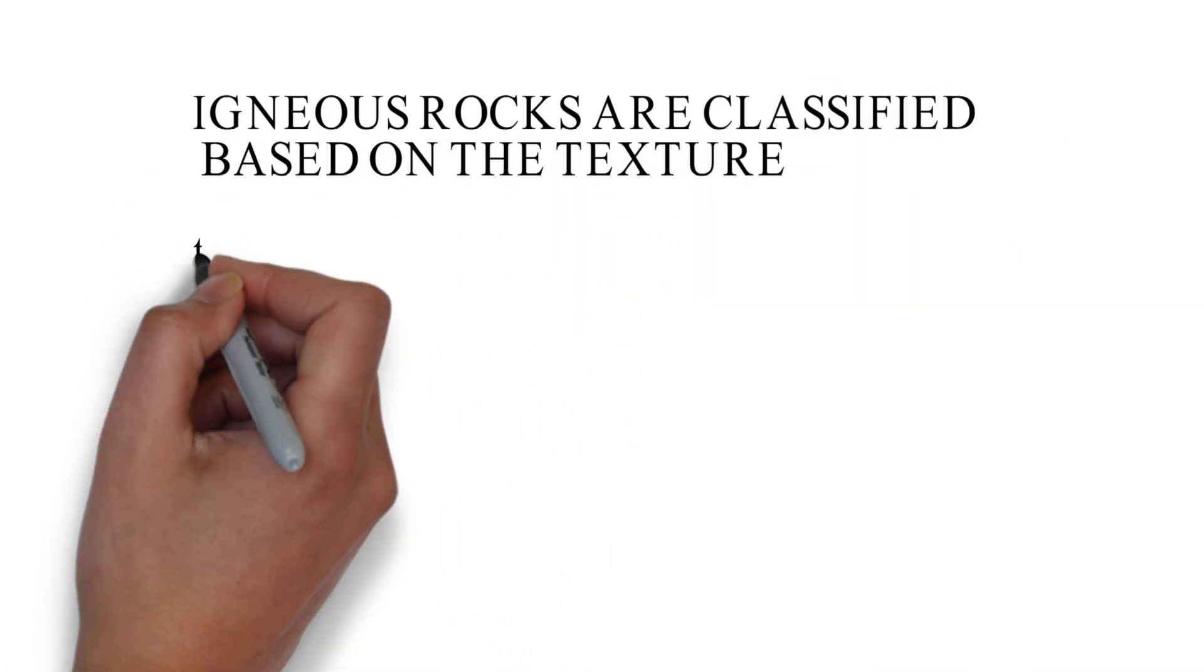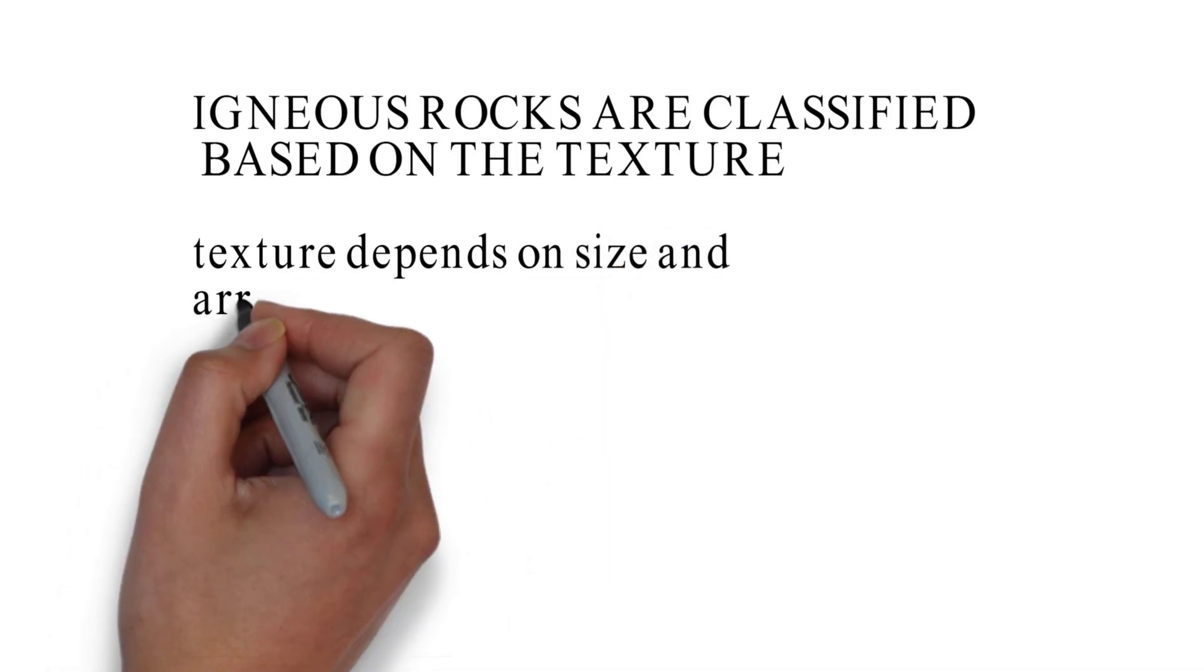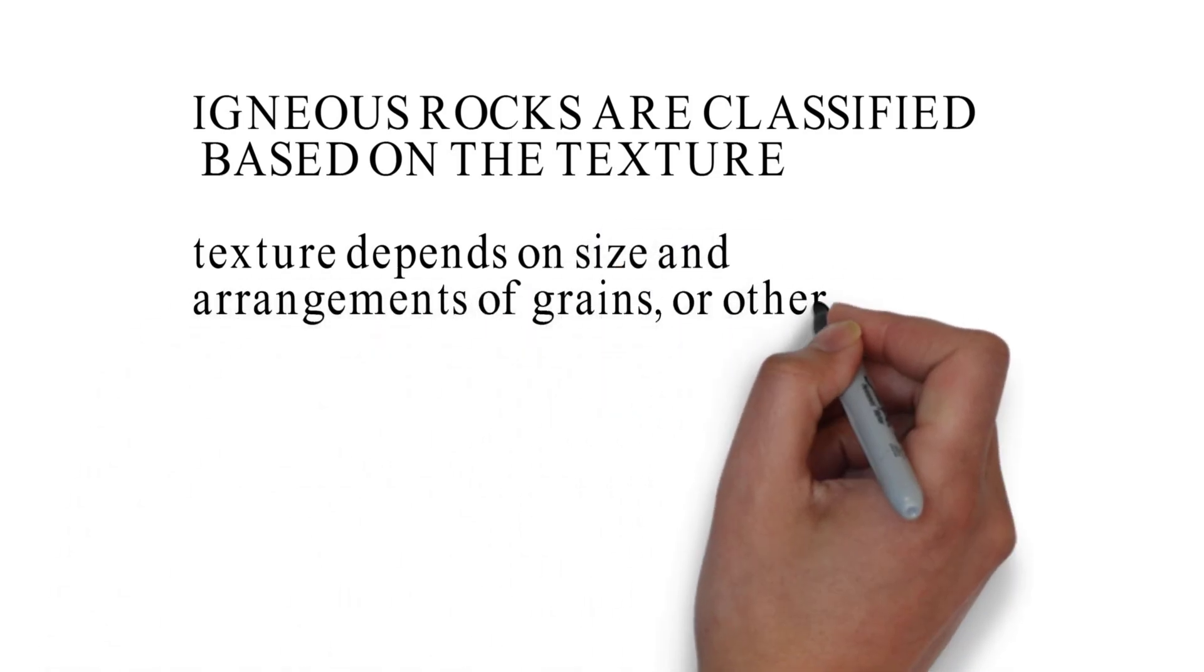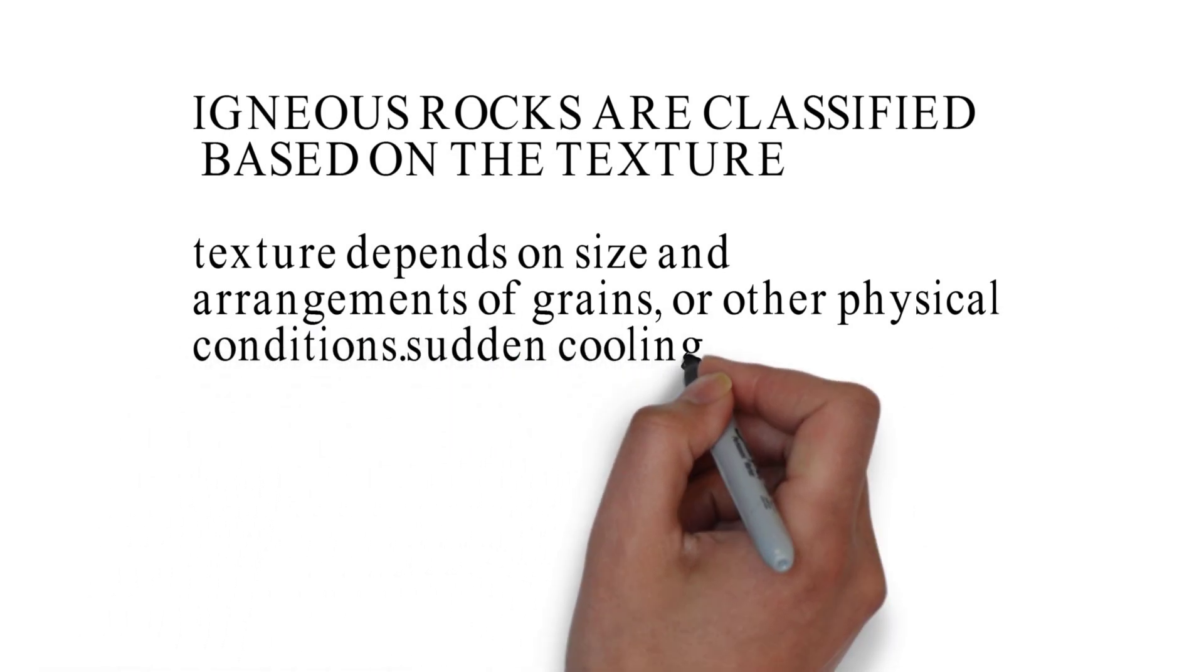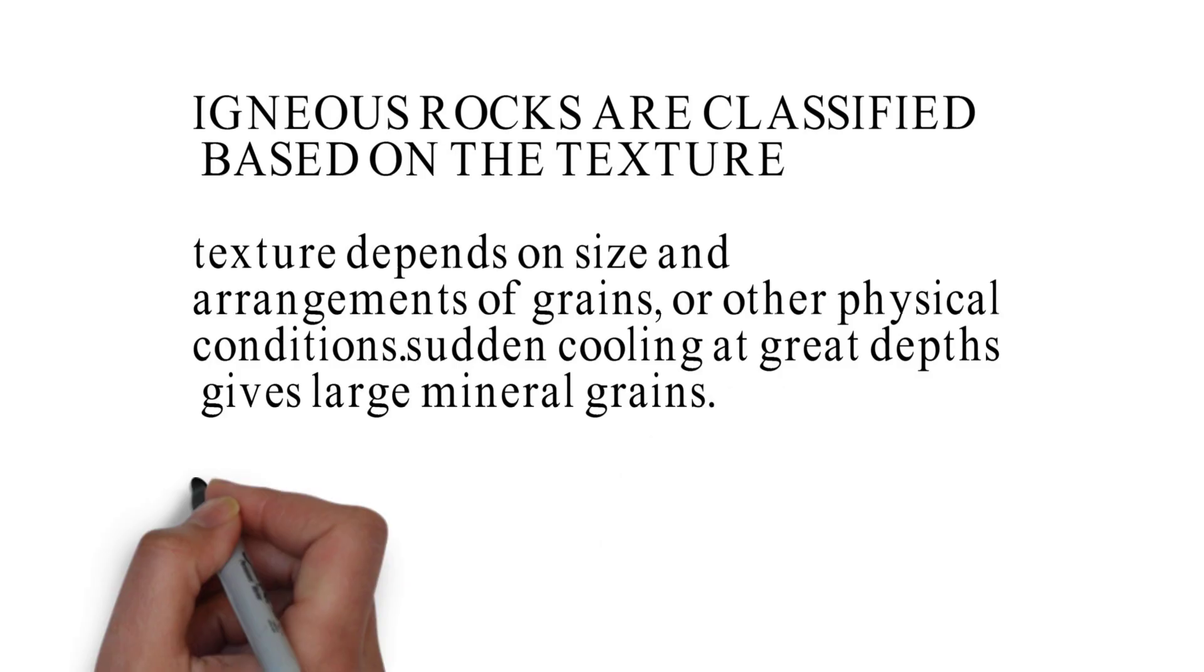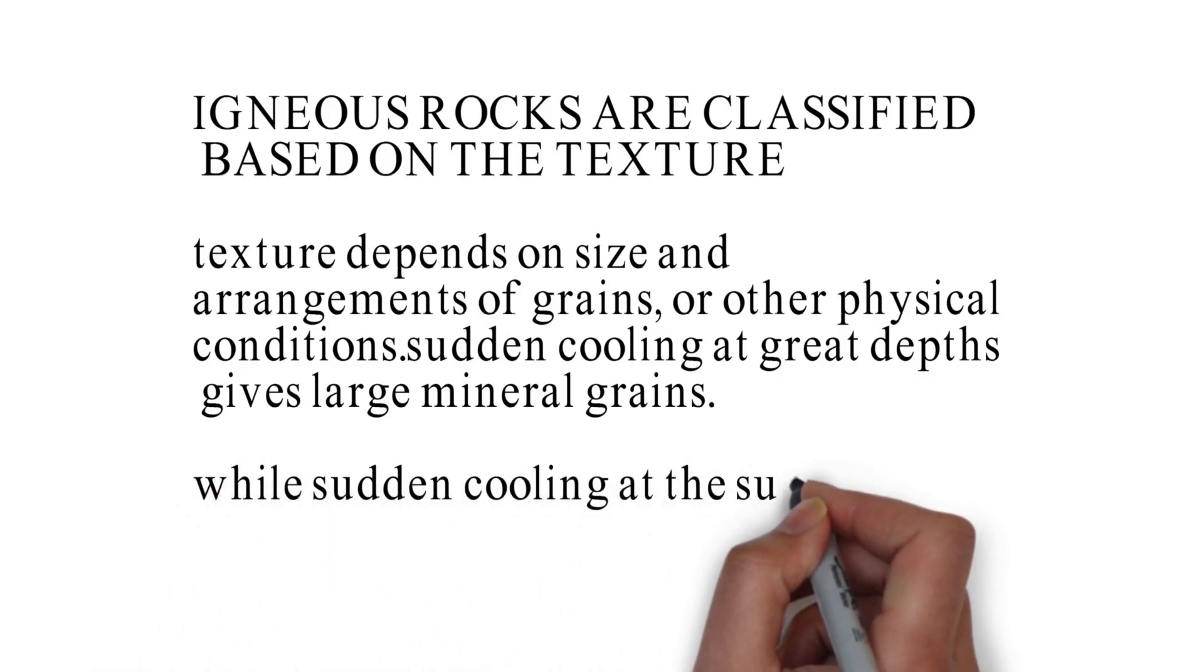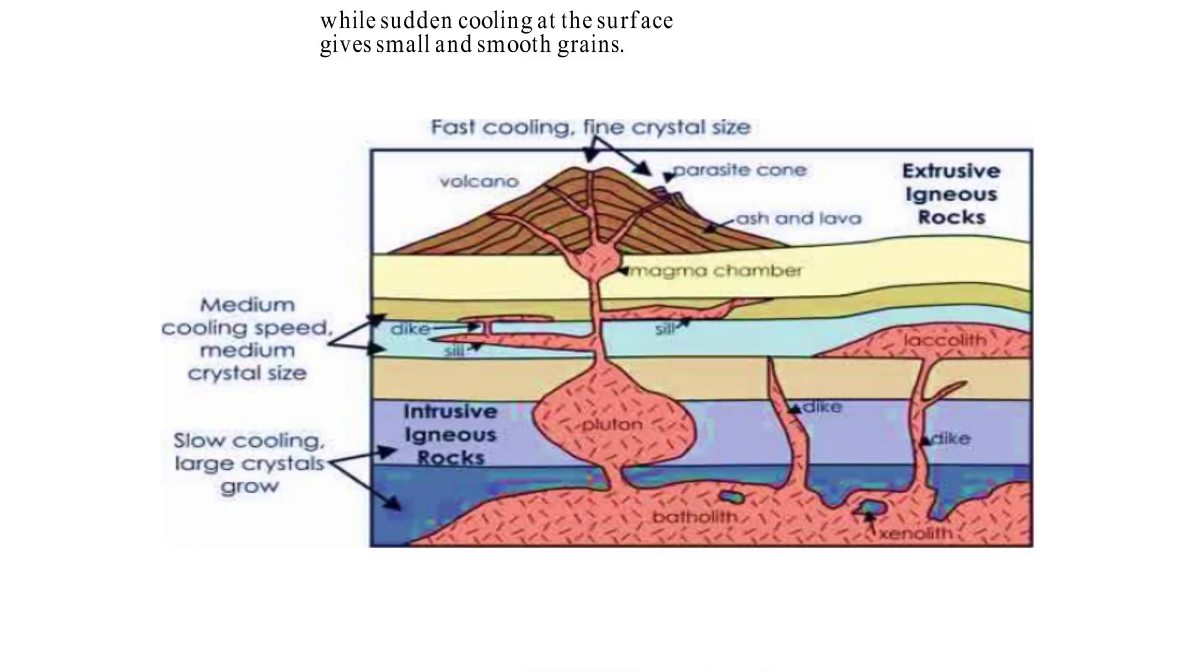Igneous rocks are classified based on the texture, and this texture depends on size and arrangement of grains or other physical conditions. Such as sudden cooling and great depths determine that the grains will be small or big, smooth or rough. In this figure you can see various forms of intrusive igneous rocks such as dikes, sills, batholiths, laccoliths, etc. When magma comes out from different openings it takes different shapes and solidifies there.